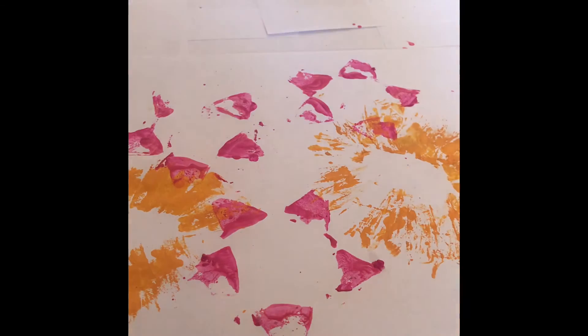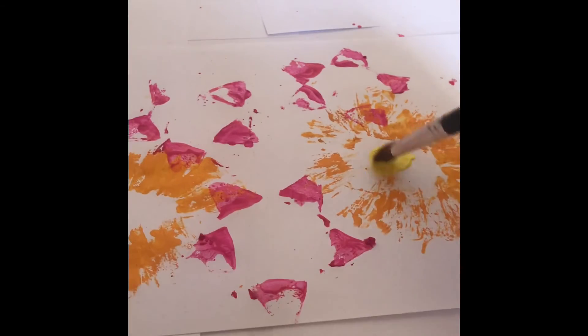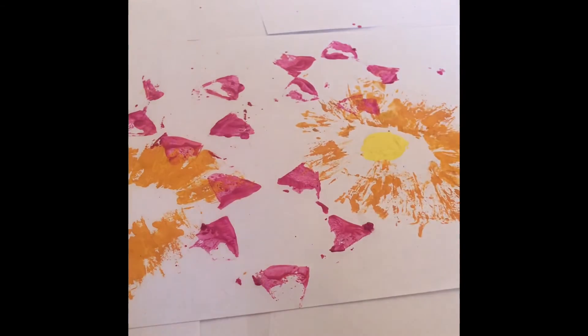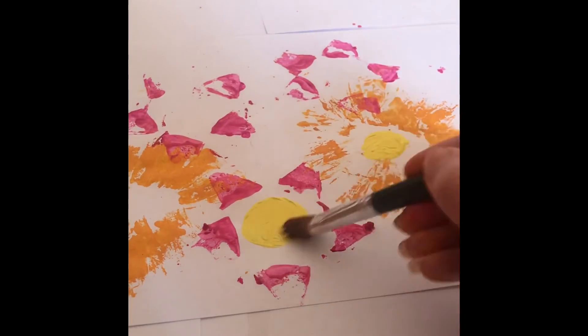So keep printing with your toilet roll holders until you fill the page, and then you can get your little one to color in the center of your flowers with a different color.